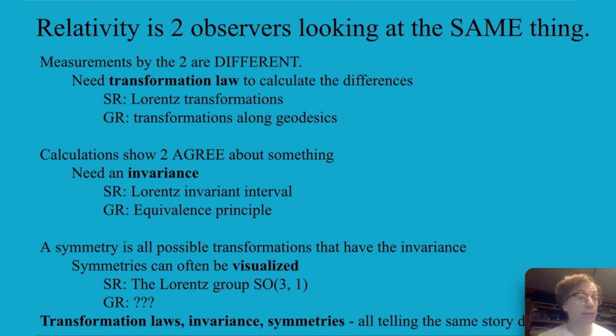Now symmetries are all possible transformations that have the same invariance and I hope that we will always be able to visualize what a symmetry is about like the Lorentz group SO(3,1). I don't think it's widely known but I don't think it's too hard to figure out. General relativity that's a different story I really don't know yet how to visualize what's going on there but at least I can dream about it.